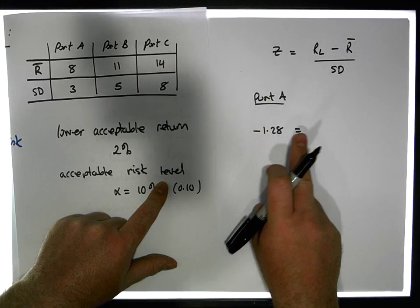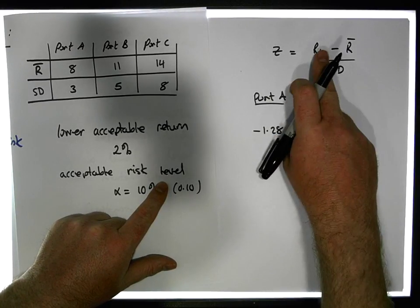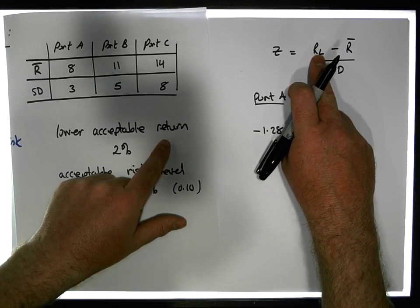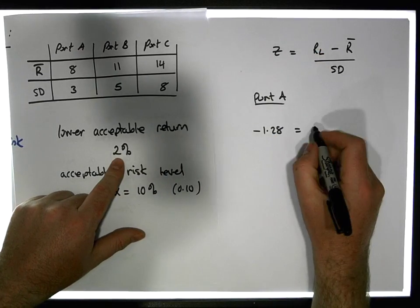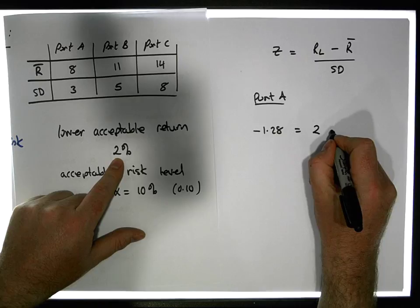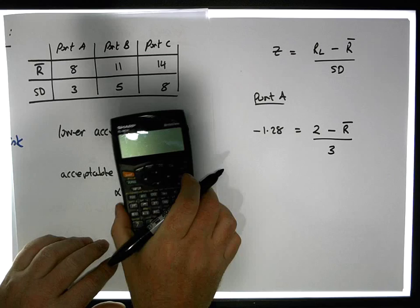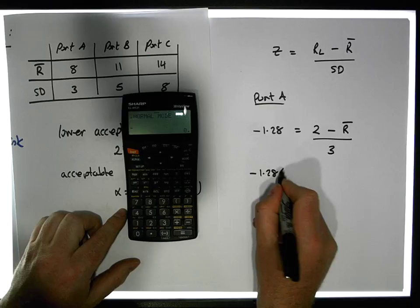Z is based off RL, which has to be equal to the minimum return level, which is going to be 2% minus the expected return of the portfolio, divided by the standard deviation, which is 3. So in this case we end up with: the expected return is minus 1.28 times 3, which is equal to 2 minus R̄.